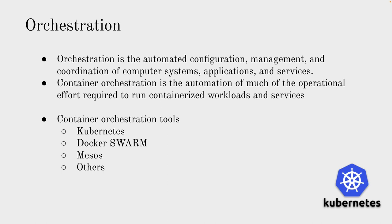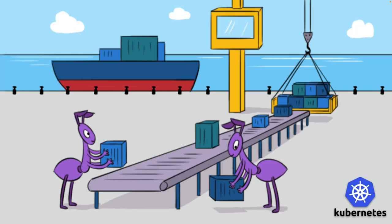Let's look at this picture: there are a few ants, a ship, a crane, and small boxes — we can call those containers. They are arranging the containers, putting them in a crane, and the crane is shipping them to a big ship that is moving around. Thinking about this in Kubernetes terms: the boxes are containers, the crane is like the scheduler, and the ship can be thought of as the nodes.